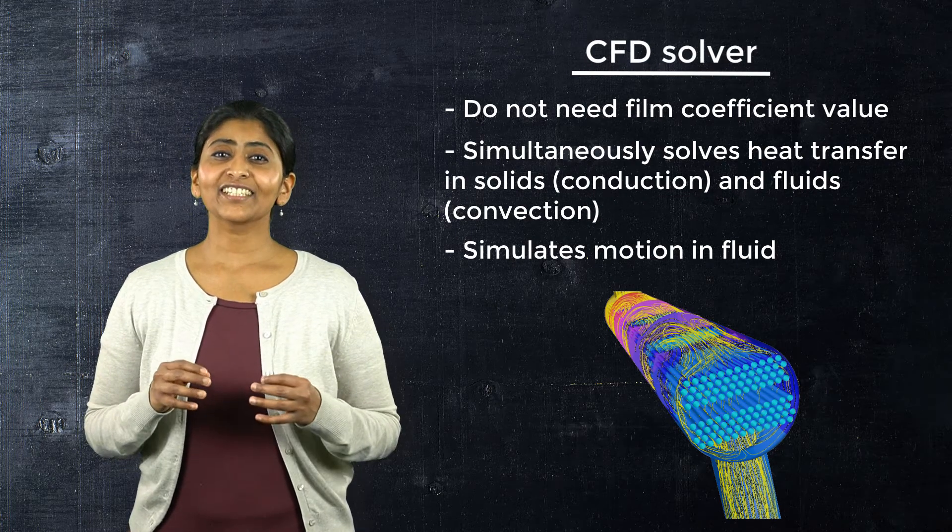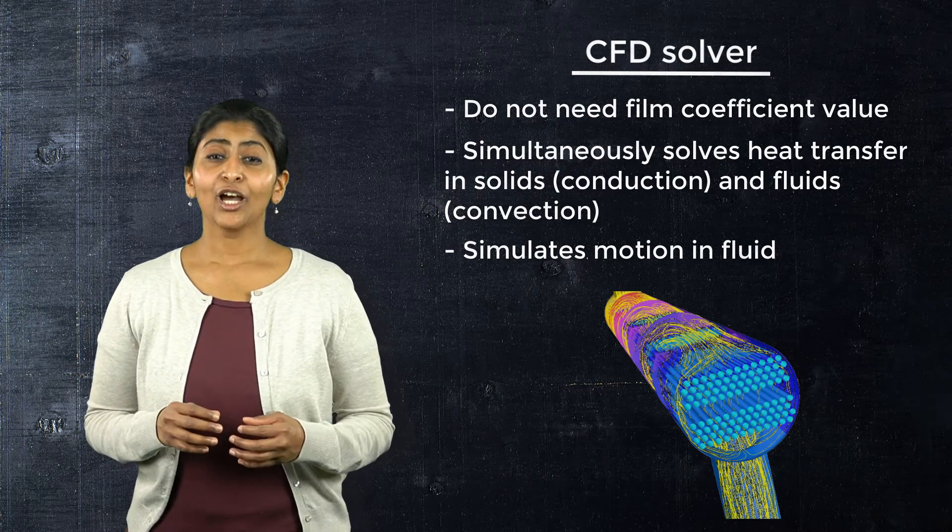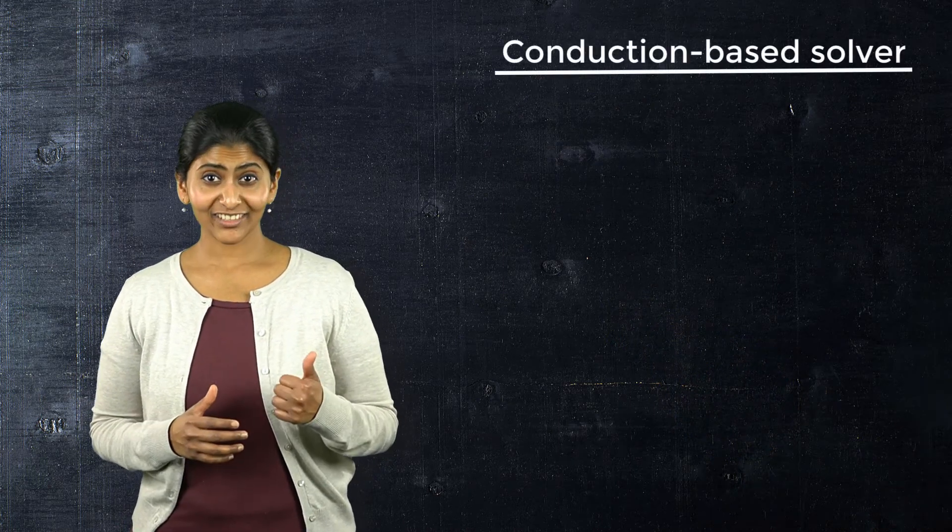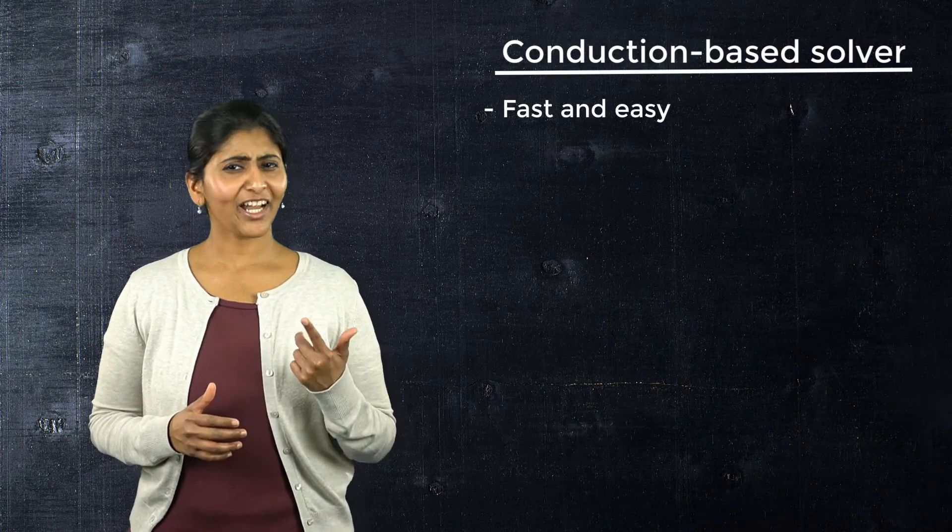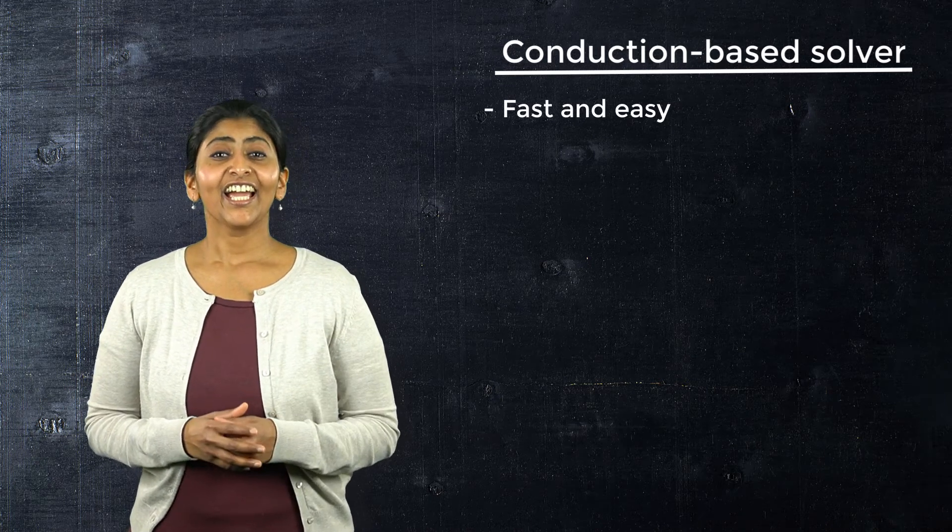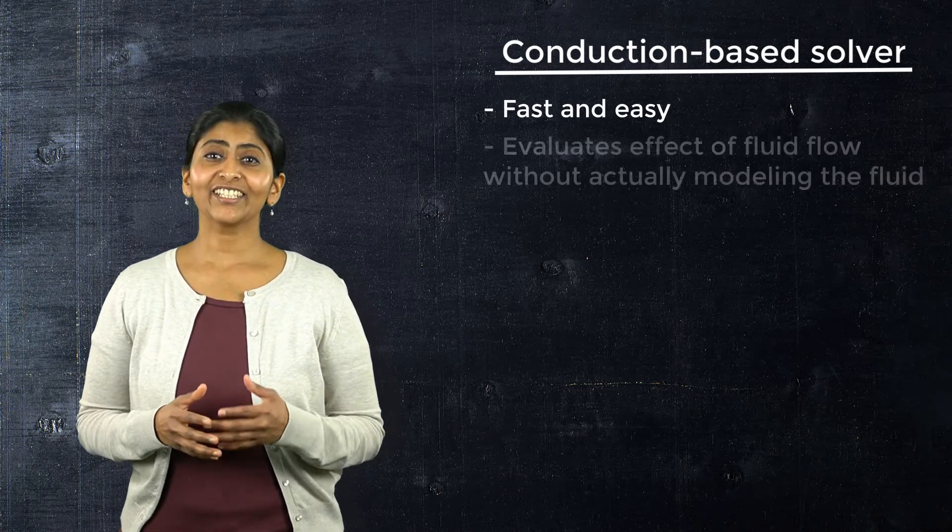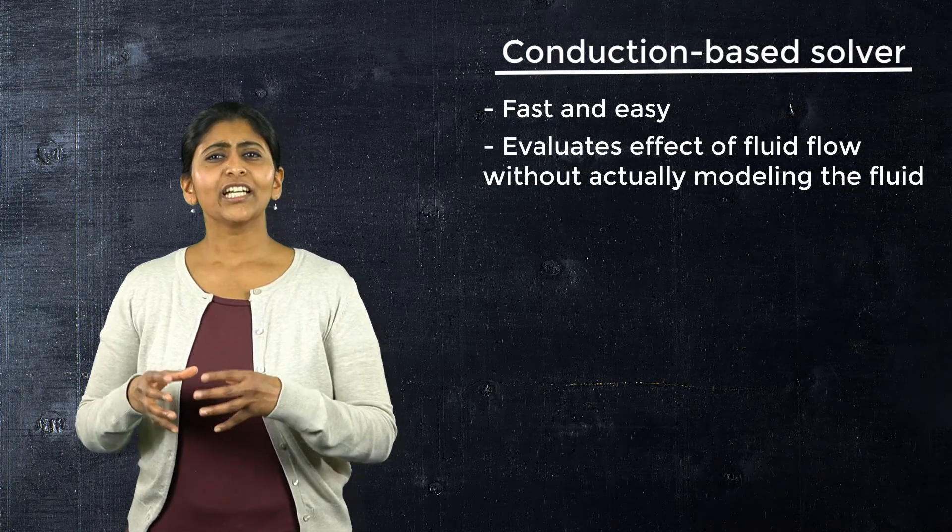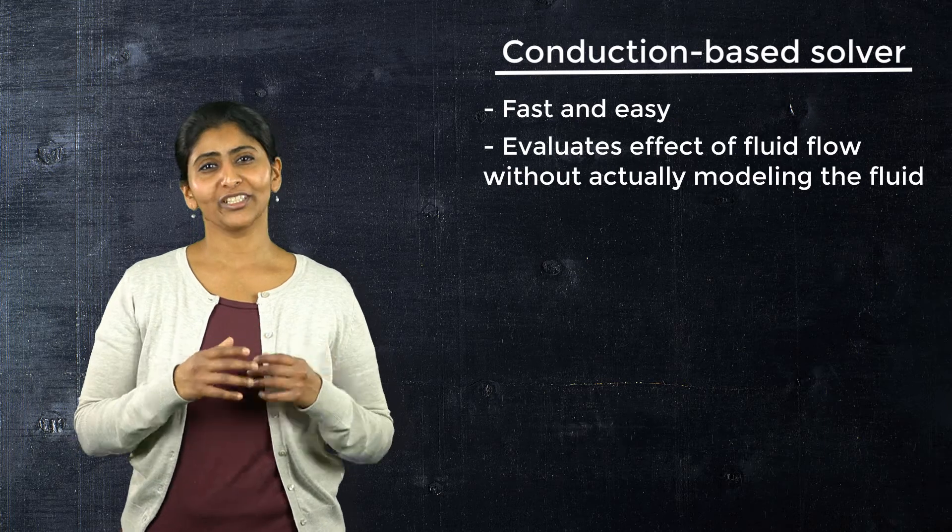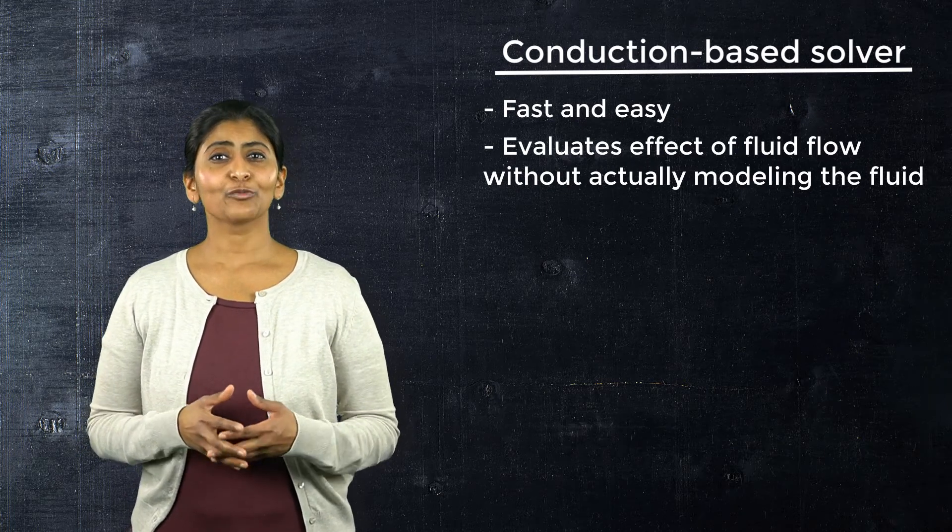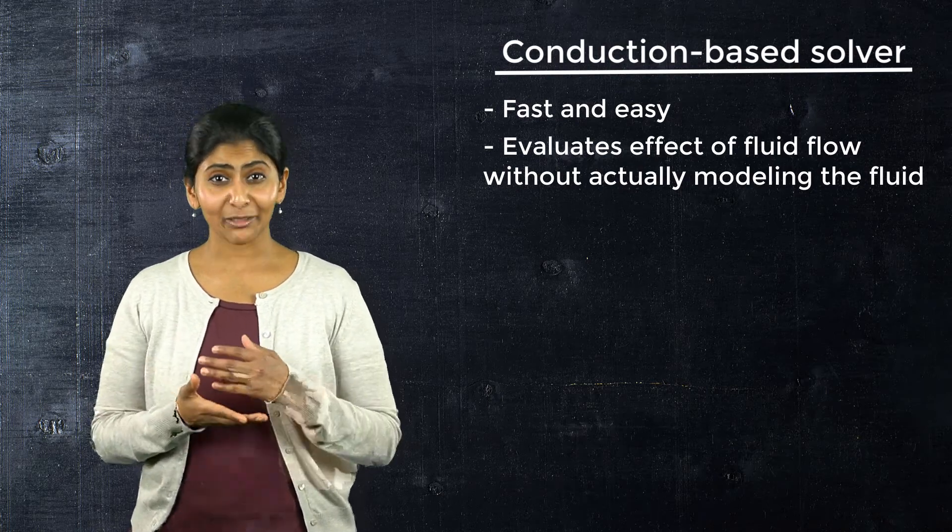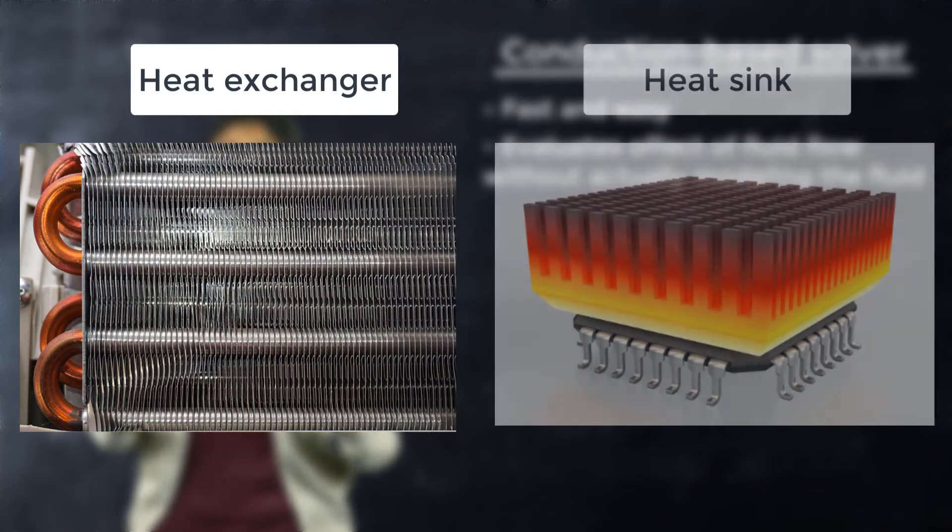Solving such a problem is complex and time-consuming. Hence, using the convection boundary condition with a conduction-based solver is quite useful. It is faster, easier to solve and saves time. It allows us to evaluate the effect of fluid flow on the heat transfer in the solid without actually modelling the fluid. Some common examples where convection boundary conditions are used to predict temperature distribution in structures are heat exchangers and heat sinks.